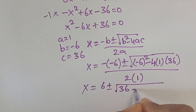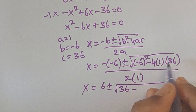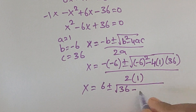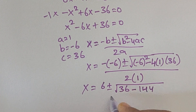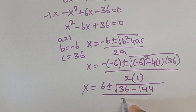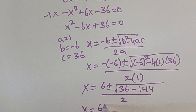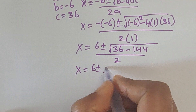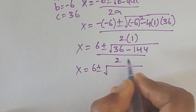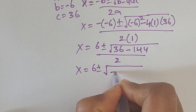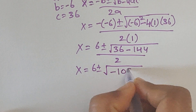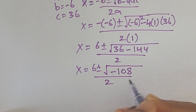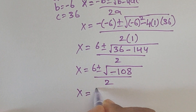Now x equals 6 plus or minus square root of 36 minus 144, divided by 2. Since 36 minus 144 equals minus 108, we have x equals 6 plus or minus square root of minus 108, divided by 2.